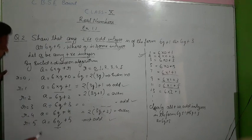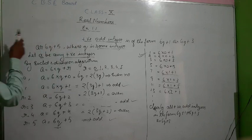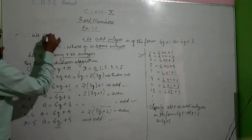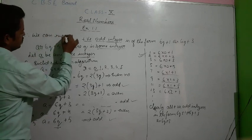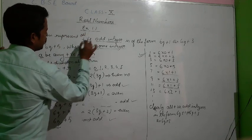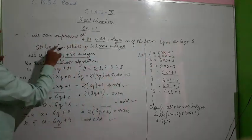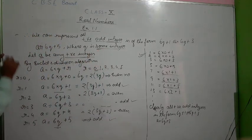Therefore, we can represent all positive odd integers in the form 6q+1, 6q+3, or 6q+5, where q is some integer. This is what we had to prove. I hope you understood this question. Please pause the video and write down this part.